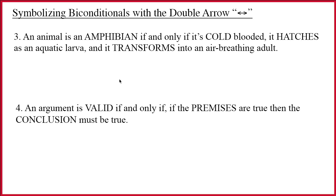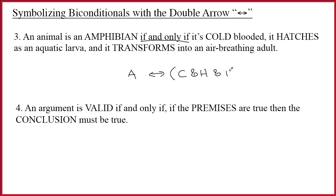These two sentences are both definitions. One of the roles of 'if and only if' in English is to introduce a definition, which is especially important in logic. Sentence three says 'an animal is an amphibian if and only if' — so I put the double arrow for the if and only if. The definition gives three properties: it's cold-blooded, it hatches as an aquatic larva, and it transforms into an air-breathing adult. Amphibian if and only if you have these three properties.